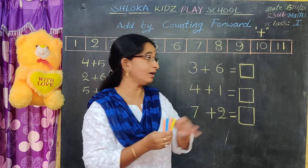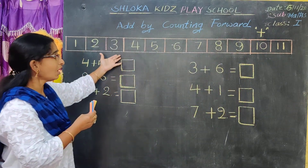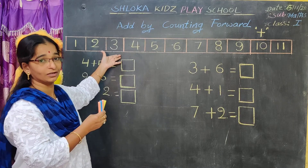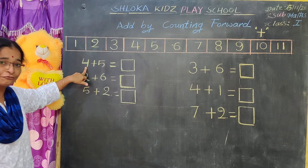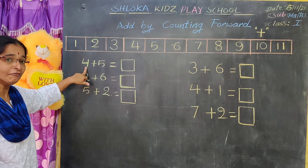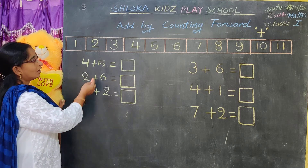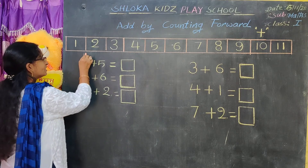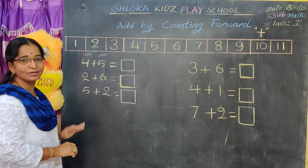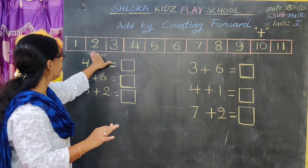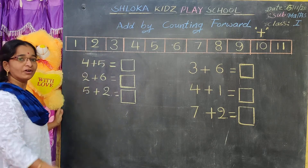Now we will go to how to count forward. See here, what is the number given? Four. Now, directly addition — some children draw lines: one, two, three, four, then one, two, three, four, five. That is the wrong thing. Should not do like that. Today we will learn how to count forward.